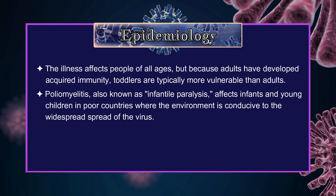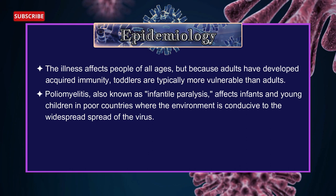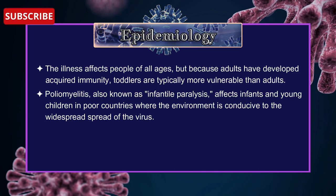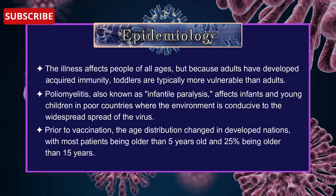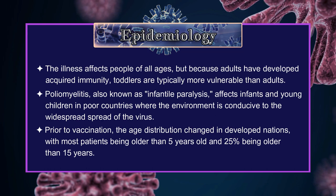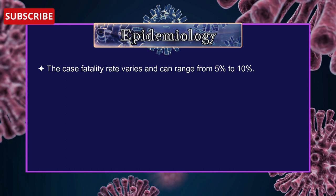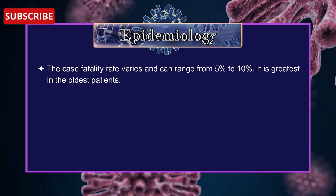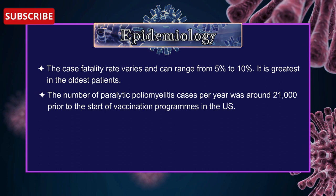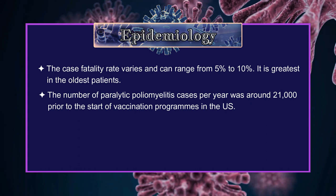Poliomyelitis, also known as infantile paralysis, affects infants and young children in poor countries where the environment is conducive to the widespread spread of the virus. Prior to vaccination, the age distribution changed in developed nations, with the most patients being older than 5 years old and 25% being older than 15 years old. The case fatality rate varies and can range from 5% to 10%, and is greater in the oldest patients. The number of paralytic poliomyelitis cases per year was around 21,000 prior to the start of vaccination programs in the US.